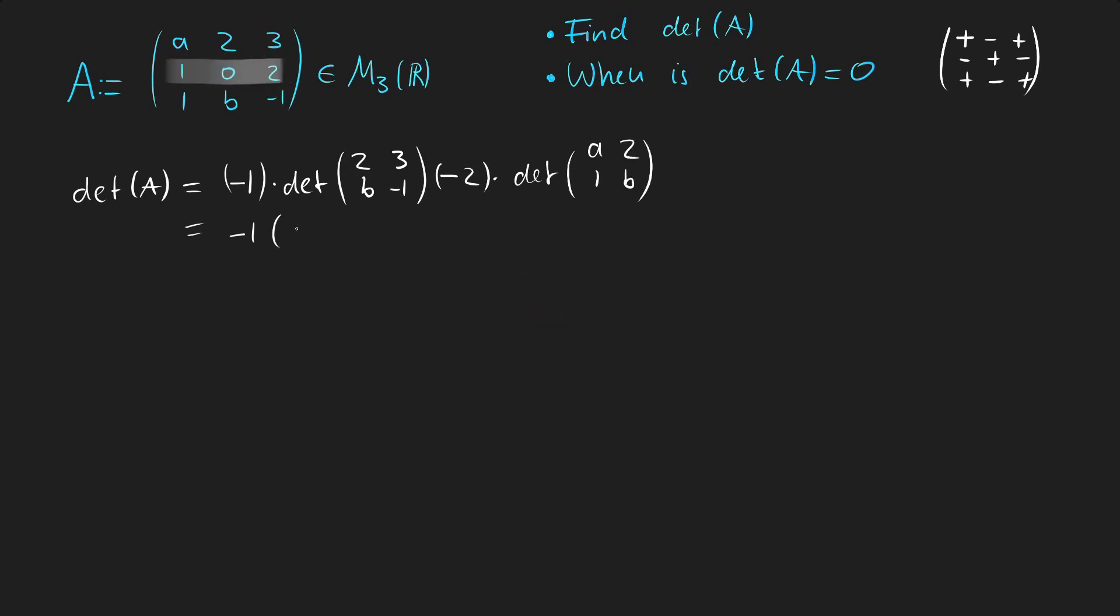So we get negative 1 times negative 2 minus 3B minus 2 times AB minus 2, which equates to 3B minus 2AB plus 6.